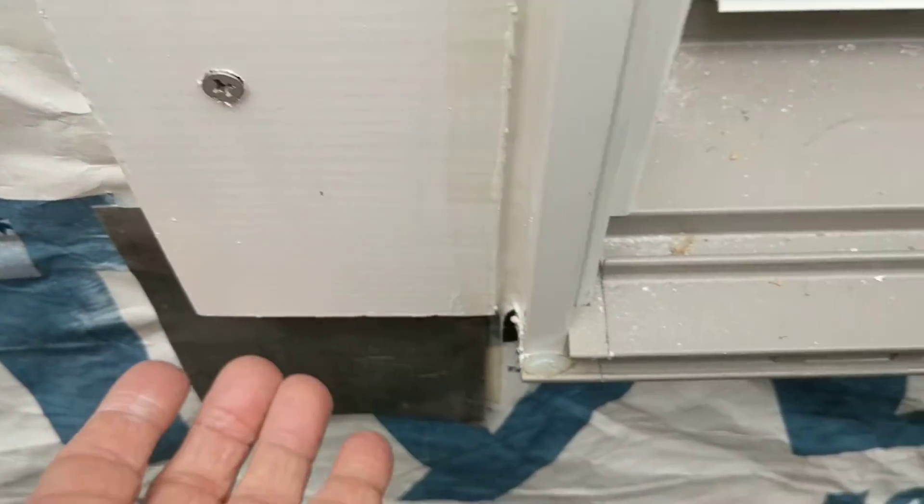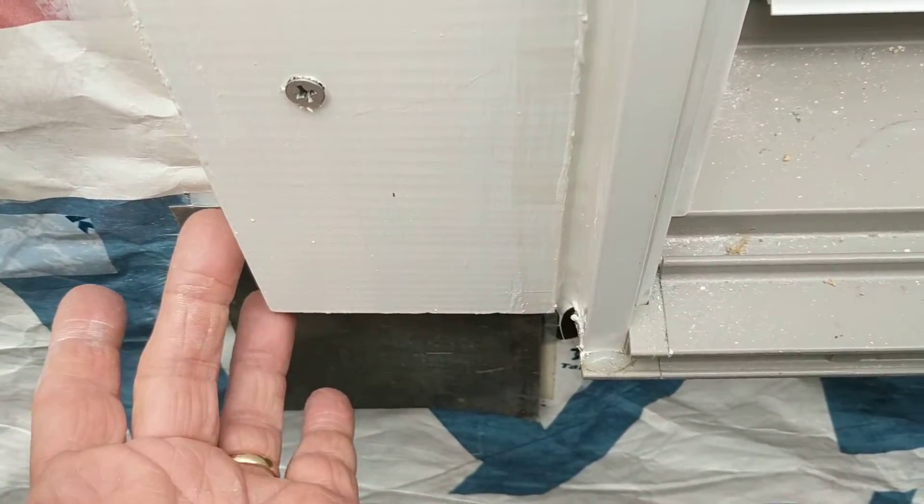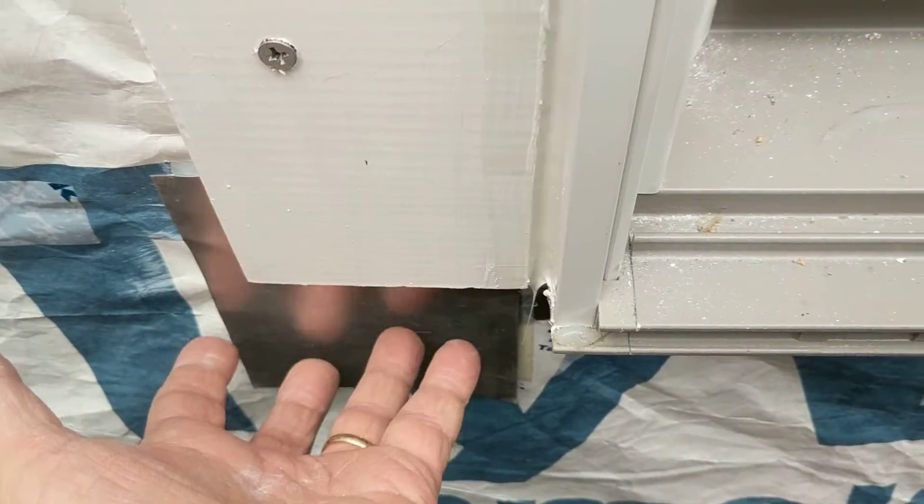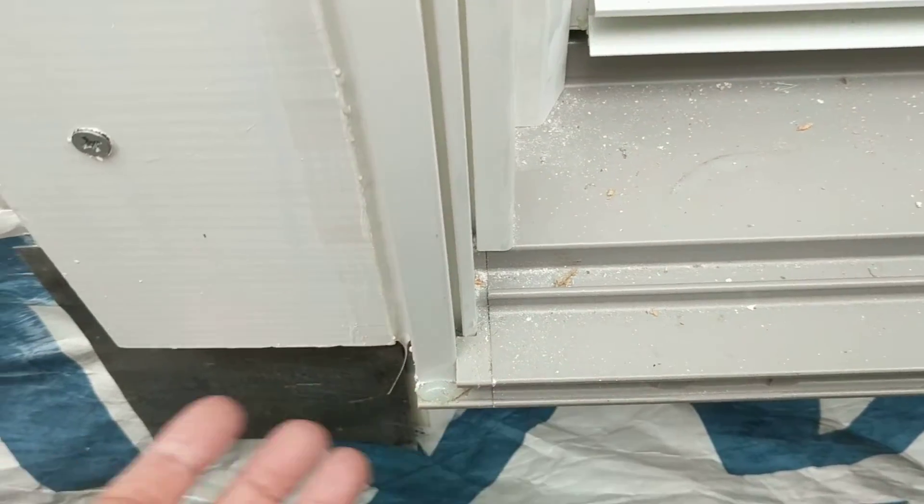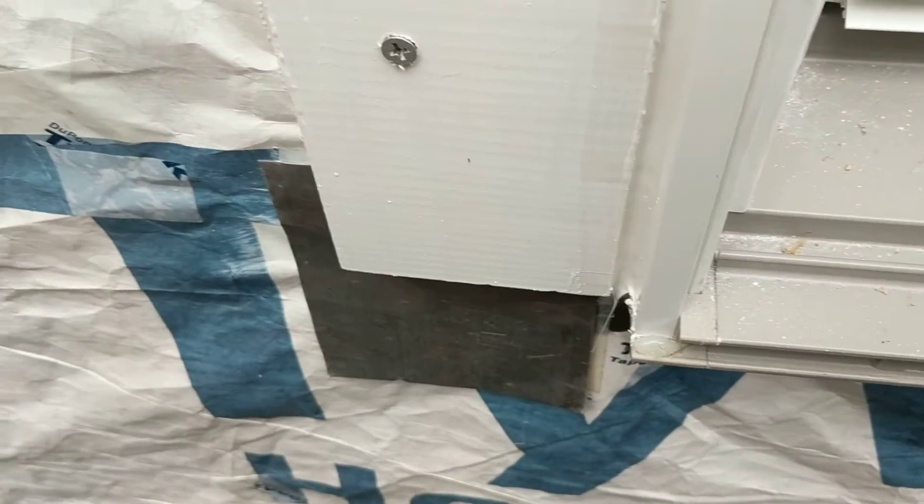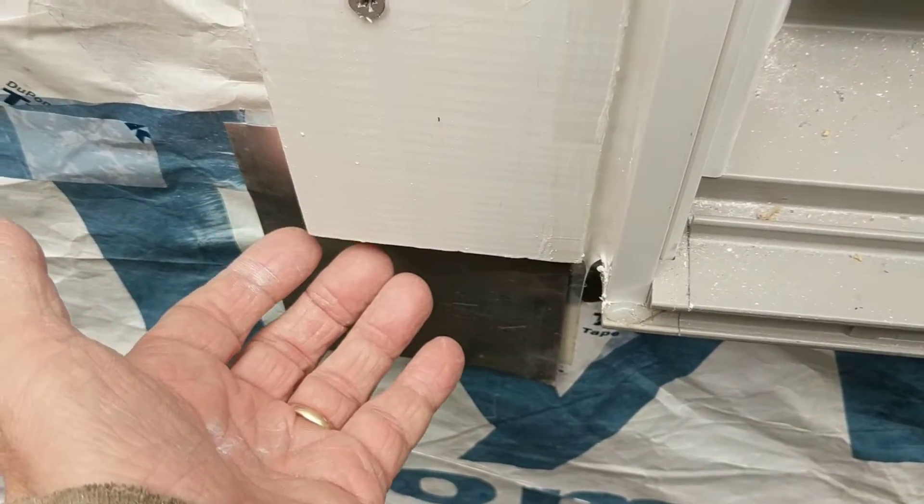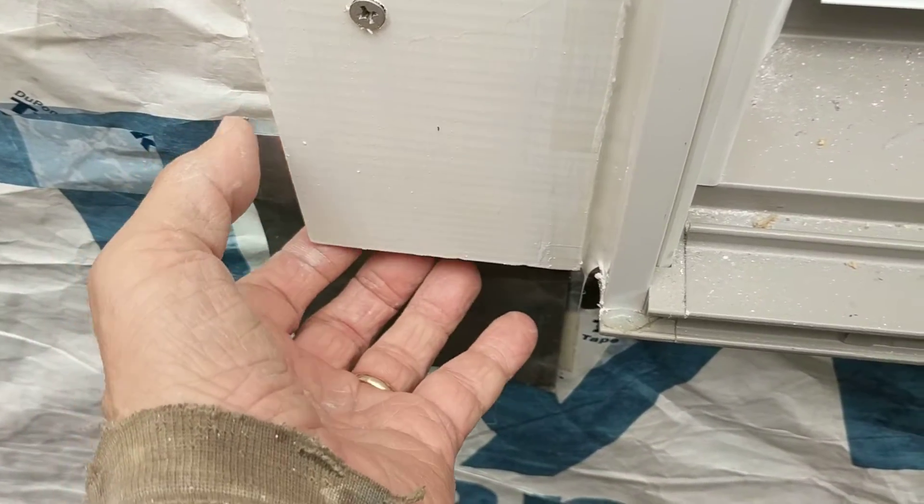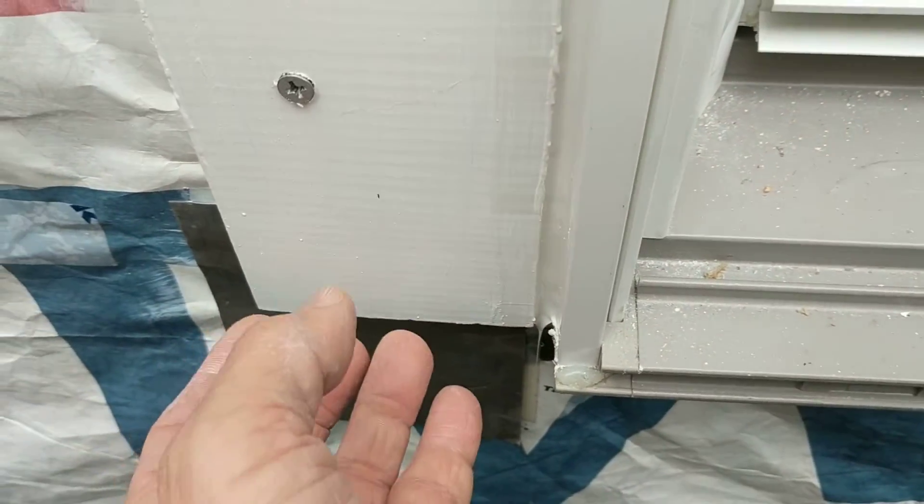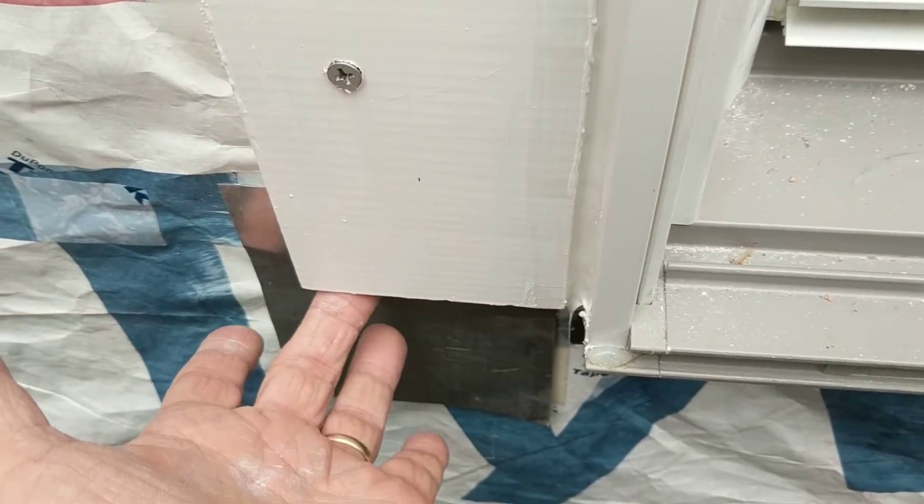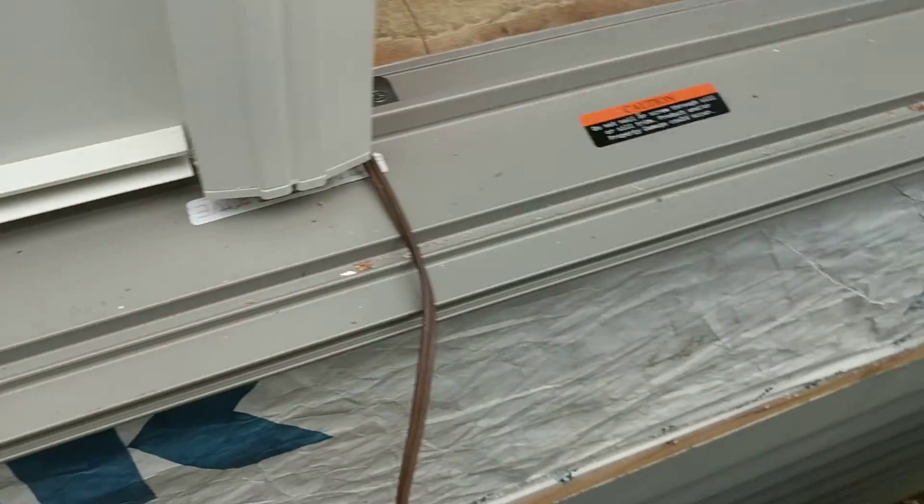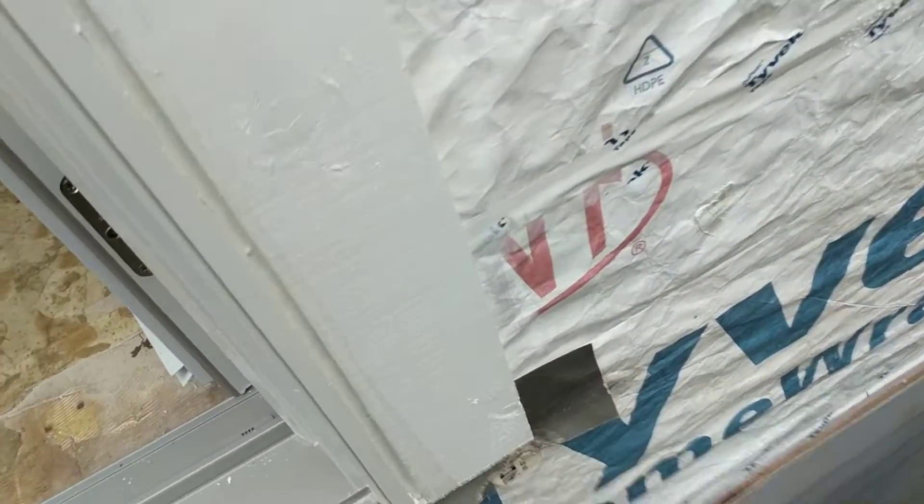Another thing I should point out: I did back off this screw and put some flashing under here. This would not be the final flashing, but depending on what goes underneath, I might end up wanting to put flashing here. So I just loosened this up and put some flashing under there as a placeholder.